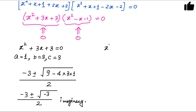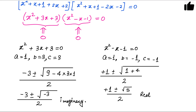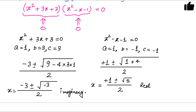For the second case, x²−x−1 = 0, where a=1, b=−1, c=−1. The solution is x = [1 ± √(1+4)] / 2 = [1 ± √5] / 2. These two roots are real. So there are four values of x in total — two imaginary and two real — and if we are concerned only with real roots, we take these two solutions.